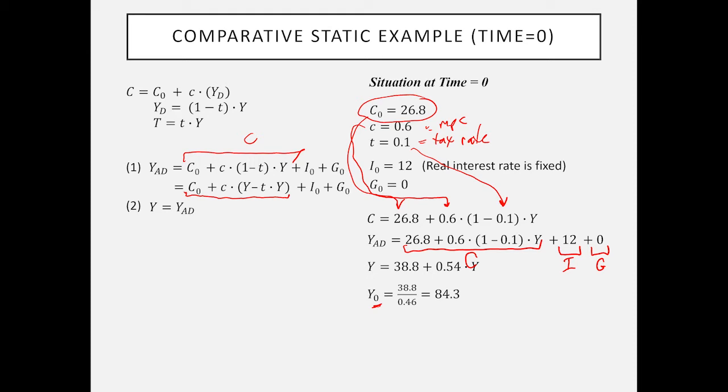If I add up these various numbers, 26.8 plus 12 gives me 38.8. 1 minus 0.1 is 0.9 times 0.6 gives us 0.54. I'm assuming aggregate demand equals real GDP, so I can replace Y_AD with Y. We wind up with one simple equation with one unknown, real GDP. It turns out that Y₀, real GDP at time 0, is equal to 84.3. I'm also assuming that the amount people want to save is equal to investment.